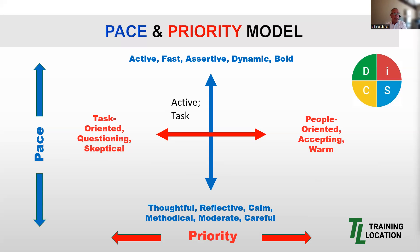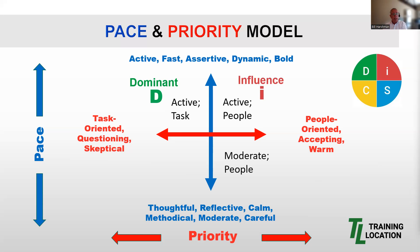An active pace with a task priority describes a D or Dominant style. An active pace with a people priority describes an I or Influence style. A moderate pace with a people priority describes an S or Steady style. And a moderate pace with a task priority describes a C or Conscientious style.